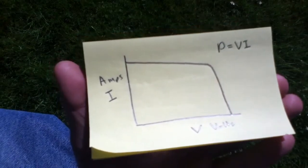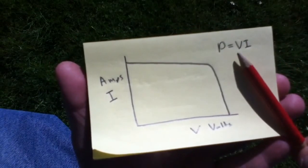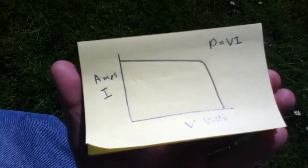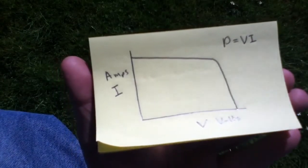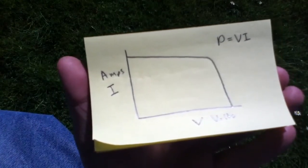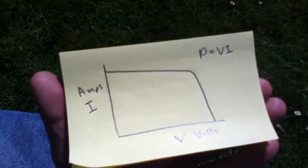And also, we know that power equals volts times amps. So, what does this graph mean? Incidentally, this graph is for a solar panel which has full sun on it.